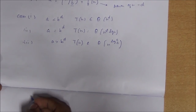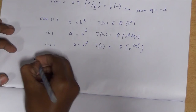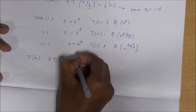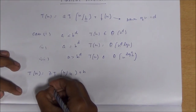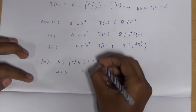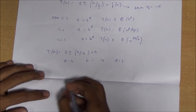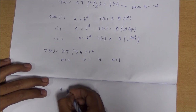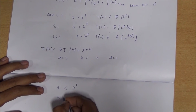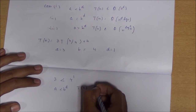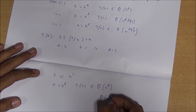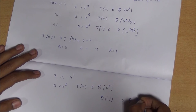Let's look at the first example equation: T(n) = 3T(n/4) + n. Here the value of a is 3, the value of b is 4, and the power of n is 1, so d equals 1. Substituting, we compare 3 and 4^1: since 3 is less than 4, this satisfies the first condition where a < b^d. Therefore the time complexity is big theta of n^d, which is big theta of n.